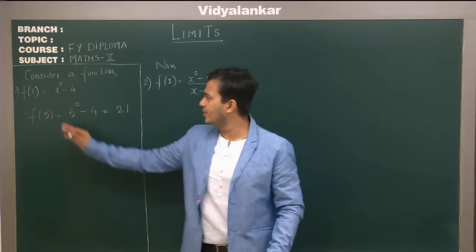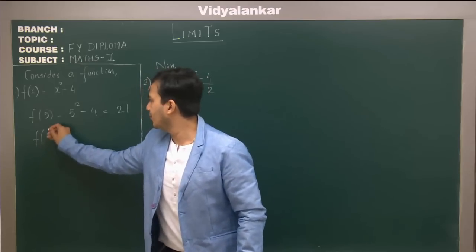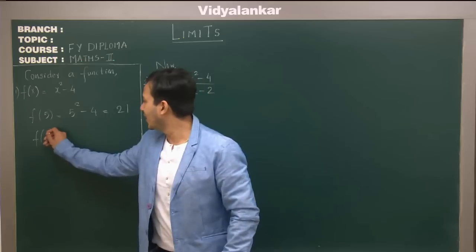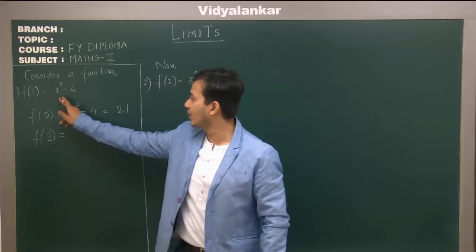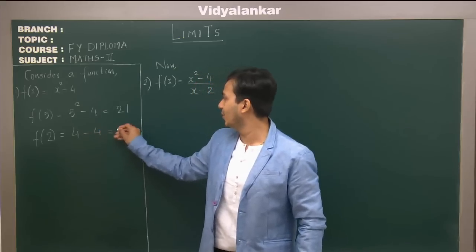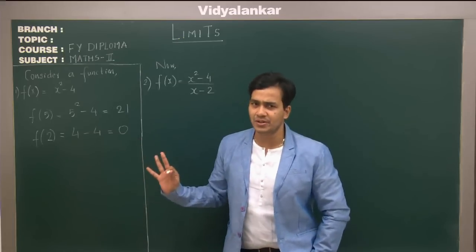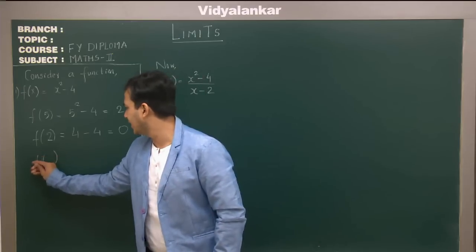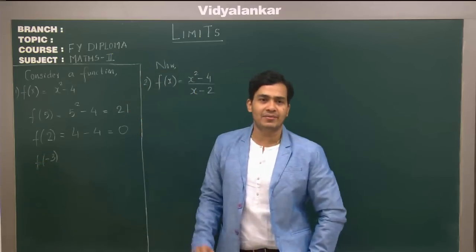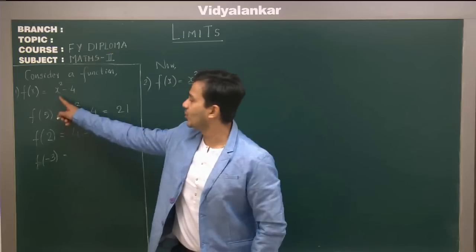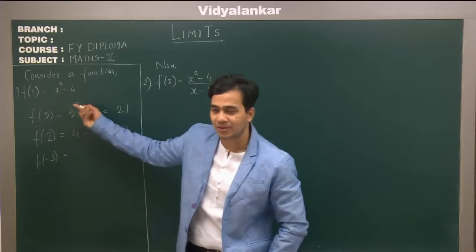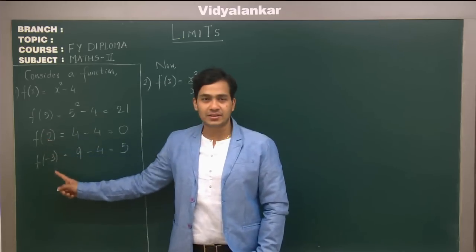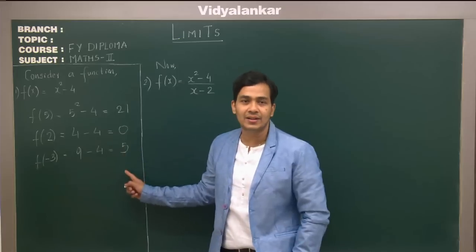That's a simple function — you put the values of x and find f(x). Let's find f(2): putting x = 2 gives 2² - 4 = 4 - 4 = 0. Zero is also a real number, so that's well defined. For a negative value like x = -3, we get (-3)² - 4 = 9 - 4 = 5. So for all real values of x, f(x) is also real — no problem at all.